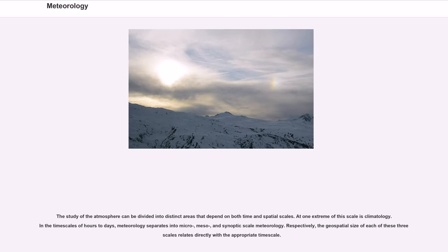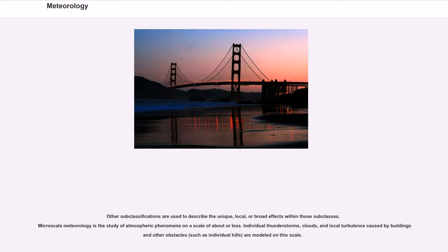The study of the atmosphere can be divided into distinct areas that depend on both time and spatial scales. At one extreme of this scale is climatology. In the time scales of hours to days, meteorology separates into micro-, meso-, and synoptic-scale meteorology. Respectively, the geospatial size of each of these three scales relates directly with the appropriate time scale. Microscale meteorology is the study of atmospheric phenomena on the scale of about 1 kilometer or less. Individual thunderstorms, clouds, and local turbulence caused by buildings and other obstacles are modeled on this scale.